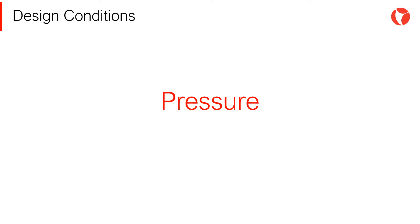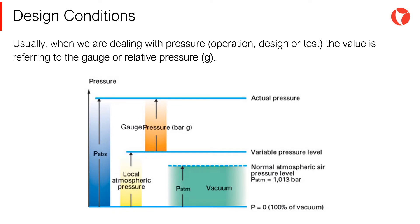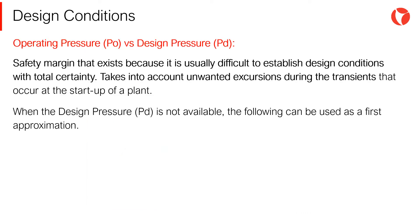The pressure at which the system must operate is one of the most important design conditions. However, it should be remembered that it does not always govern the design of a pressure vessel, as there are many other types of loads acting on the vessel. Usually, when dealing with operating, design, or test pressure, this value refers to gauge or relative pressure. The difference between the operating and design pressure is a safety margin, which exists because sometimes it is difficult to establish operating conditions with certainty.